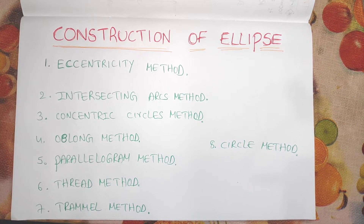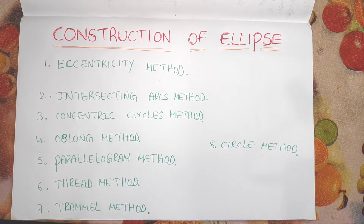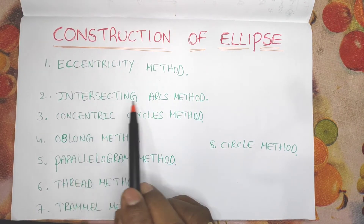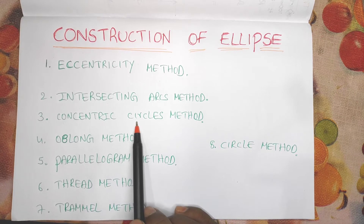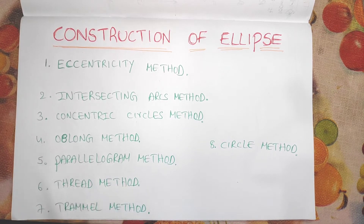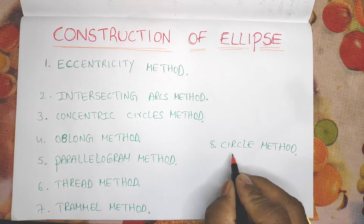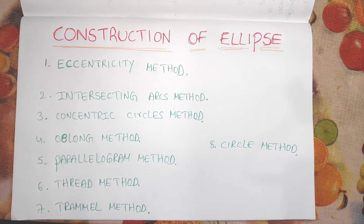We are going to do ellipse construction today, covering all types and methods slowly. We are going to do ellipse in total 8 methods. First one is eccentricity method, second one is intersecting arcs method, third one is concentric circles method, fourth one is oblong method, fifth one is parallelogram method, sixth one is thread method, seventh one is trammel method, and eighth one is circle method. These eight methods are used to do ellipse construction.